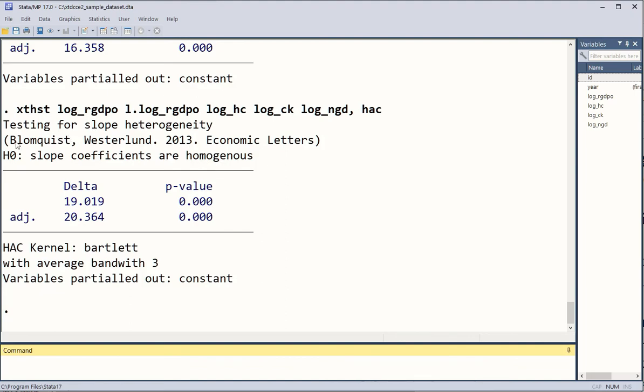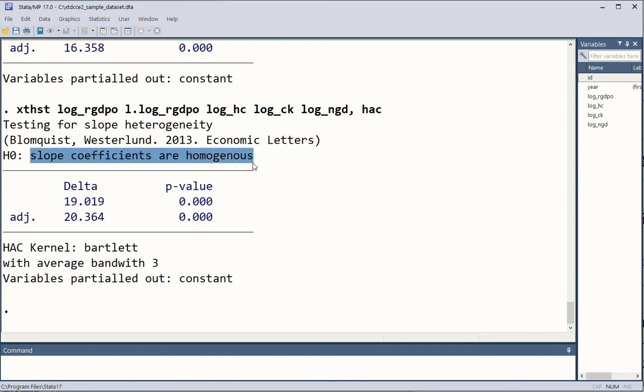And we get the results of the Blomquist and Westerlund 2013 version of the Swamy test for slope homogeneity. It was in the economic letters. The null hypothesis is the same. But this time we have the improved version which is consistent with the heteroscedasticity and autocorrelation. In this case again the statistical significance is at 1% signifying that there is slope heterogeneity in the given data.